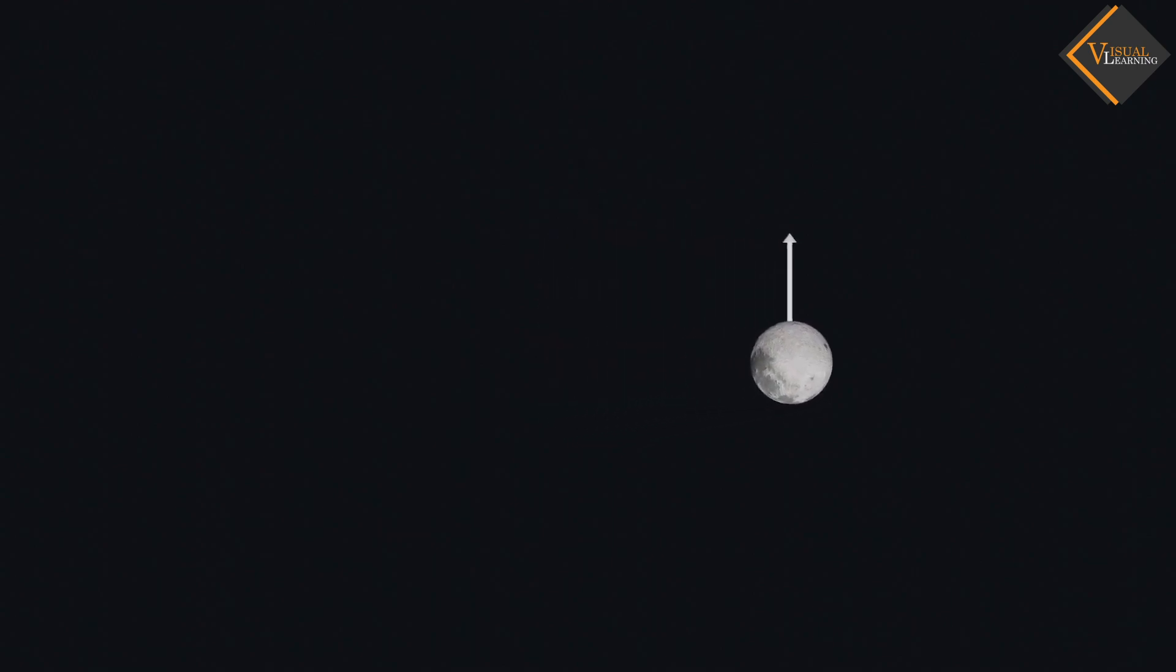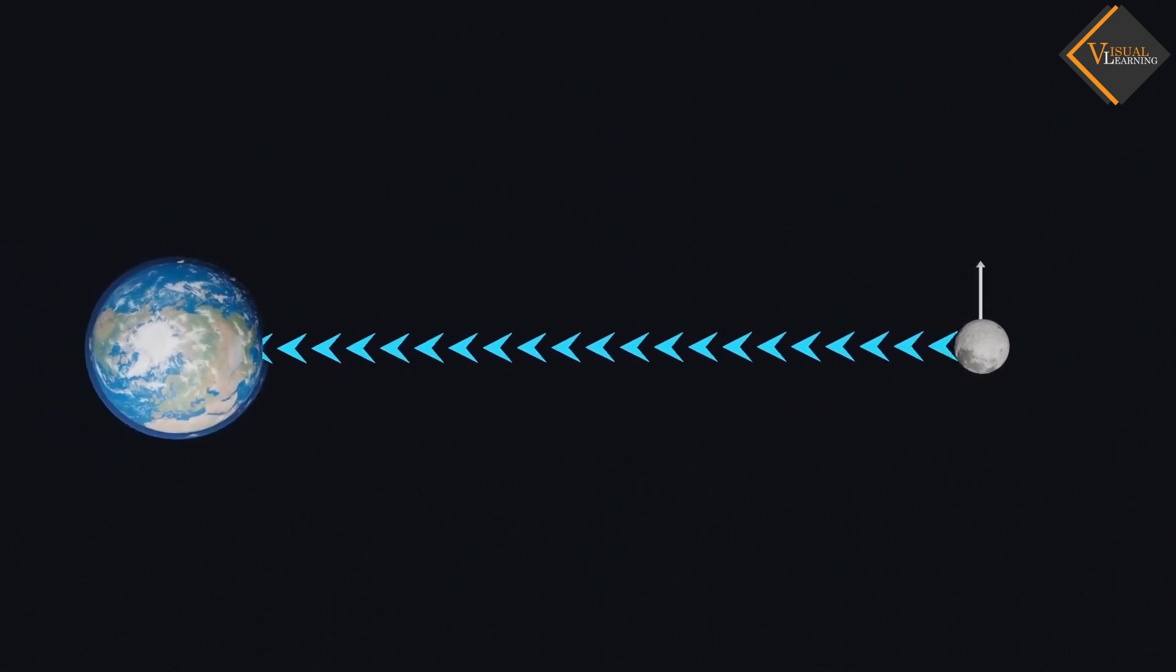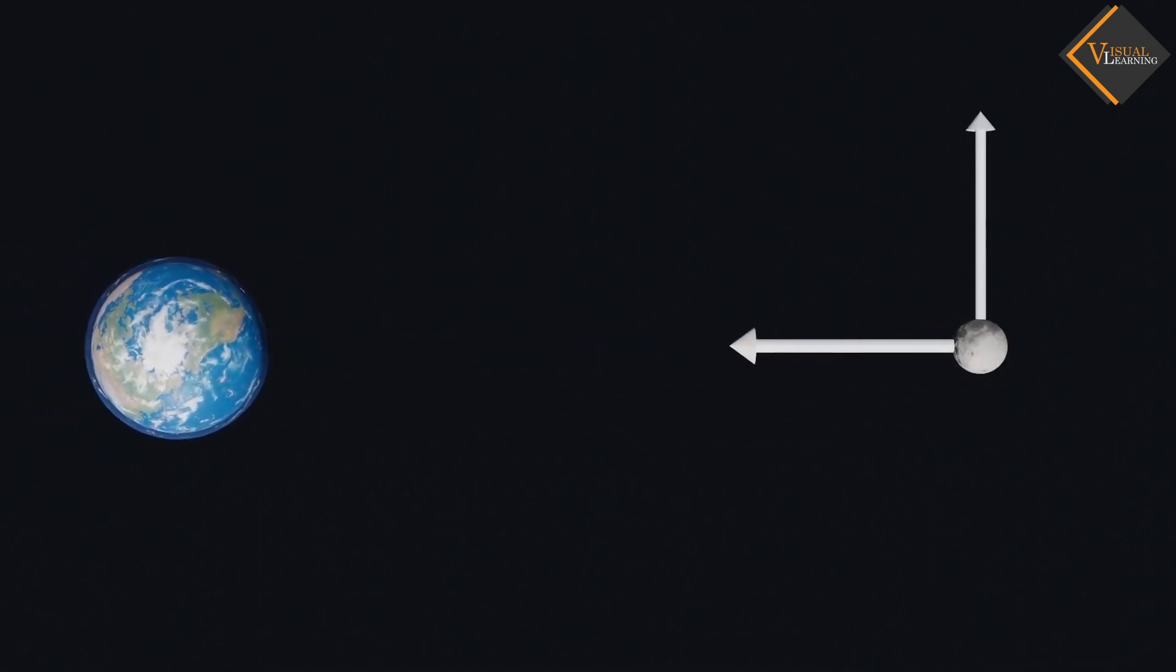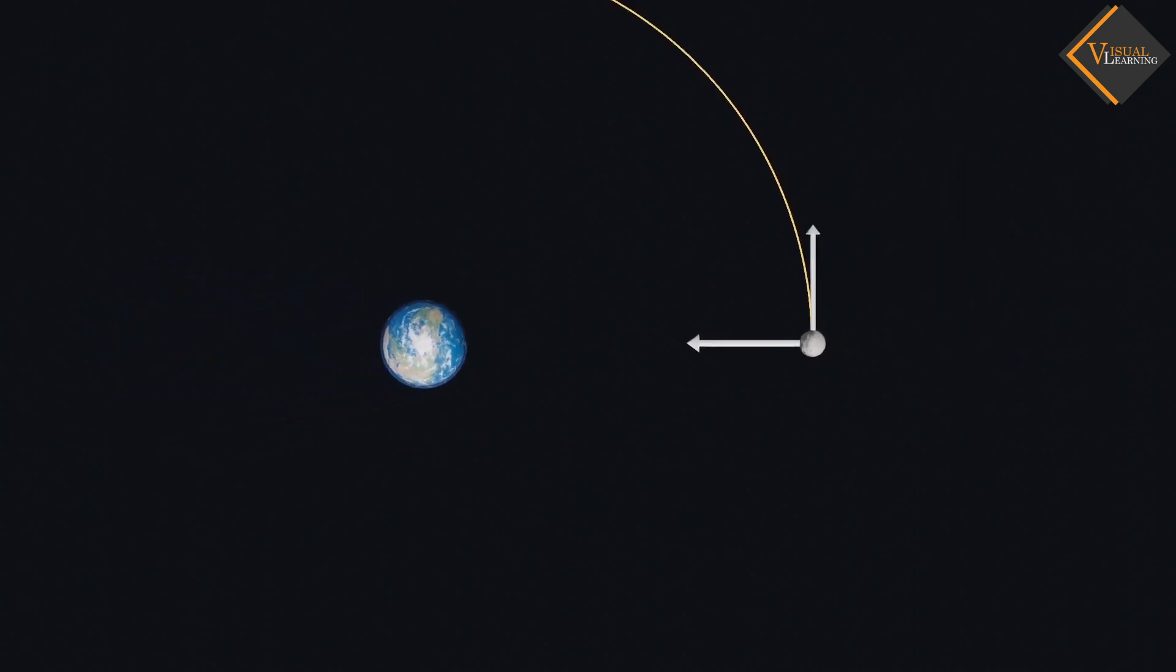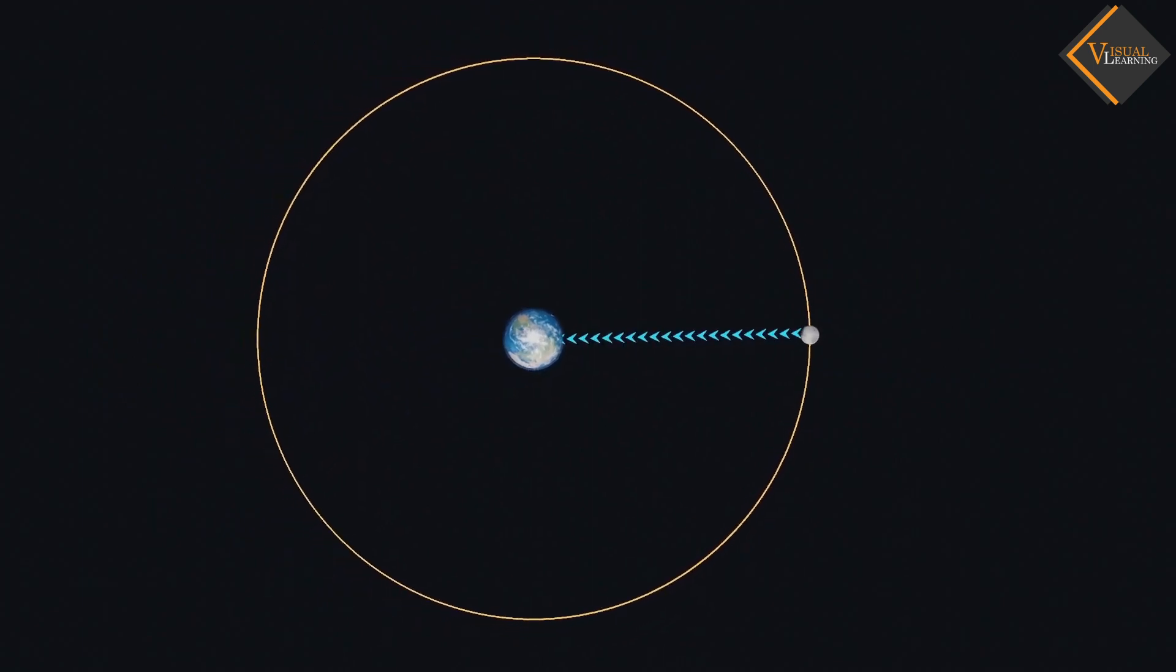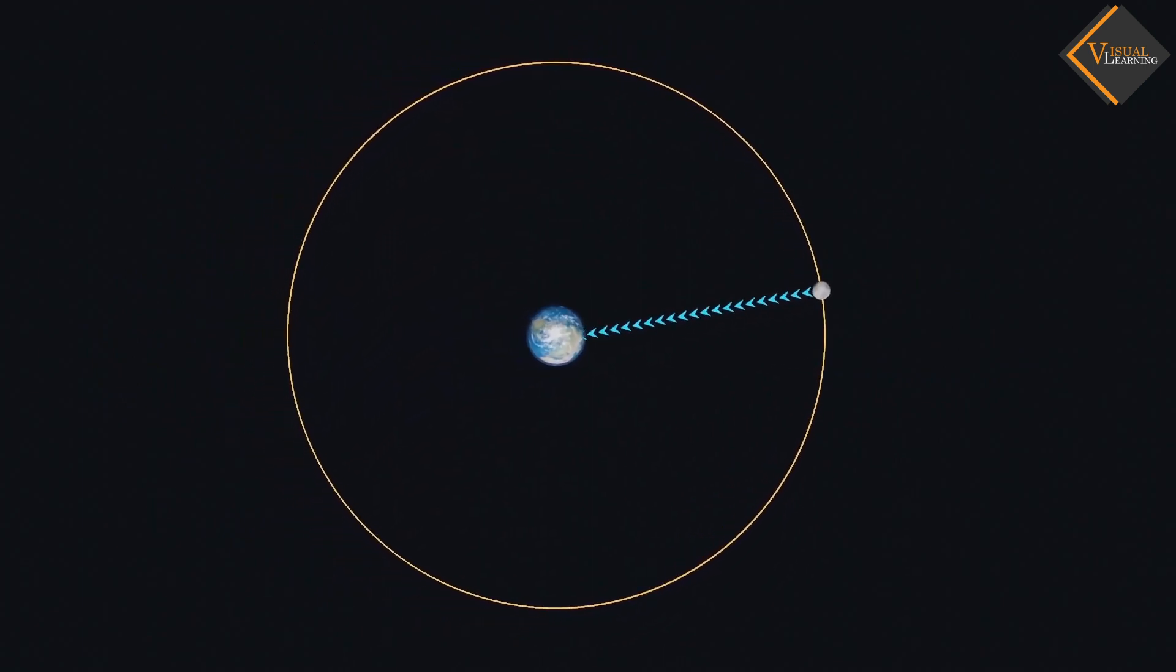Now, the earth exerts a gravitational pull on the moon. This pull gives rise to a centripetal force which is responsible for the circular trajectory of the moon. So, the moon revolves around the earth.